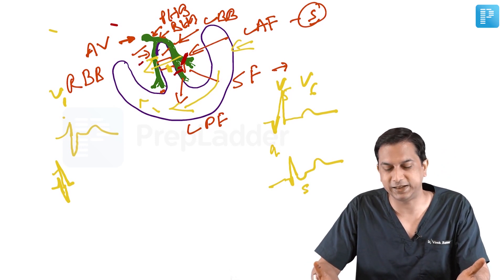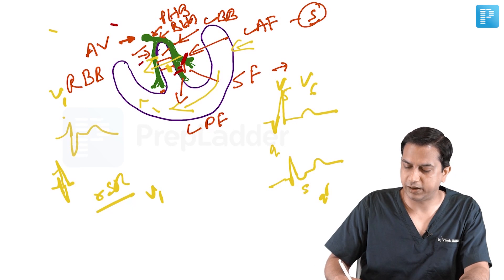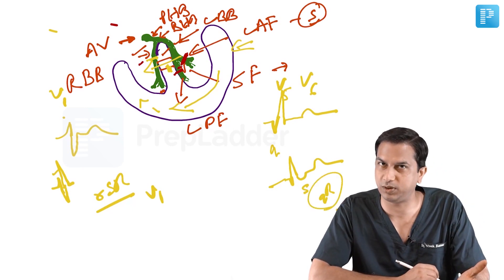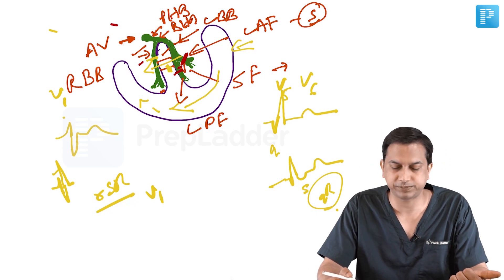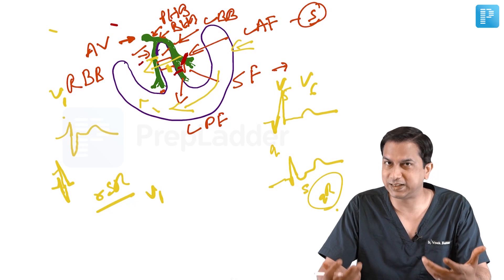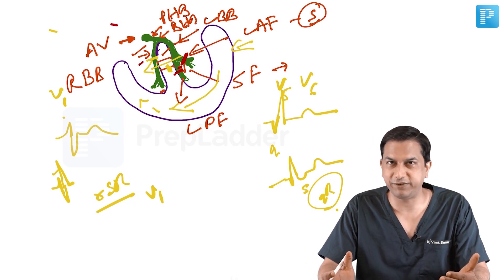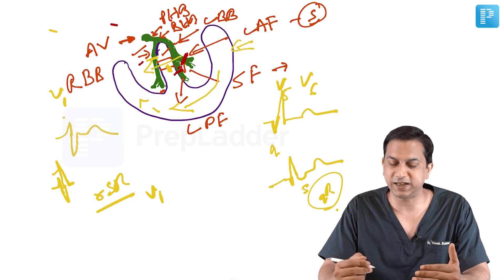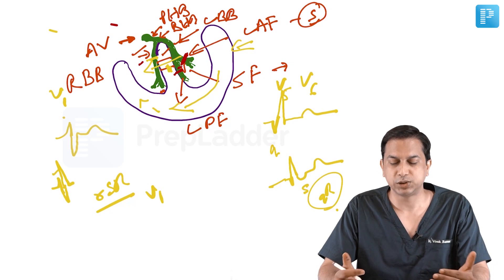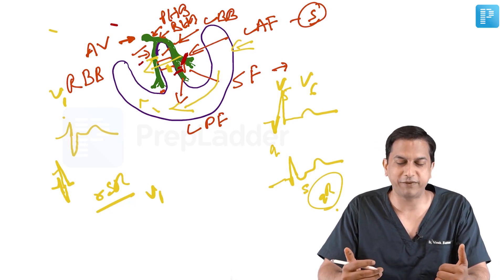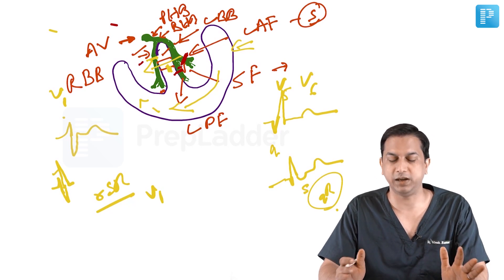It makes it simple to understand why you have an R, S, R' pattern in V1 and a Q, R pattern in V5, V6 in right bundle branch block. First, the septum depolarization will be normal, so the initial R wave will be there in V1. Thereafter, since the LV is still the predominant myocardial mass, the vector will be shifted apically and laterally, giving an S wave in V1 and prominent R wave in V5/V6. Since the terminal wave front will be directed towards the right — because the RV also needs to be depolarized — it will depolarize from left to right, giving another R wave in V1 with a slurred S wave in V6.